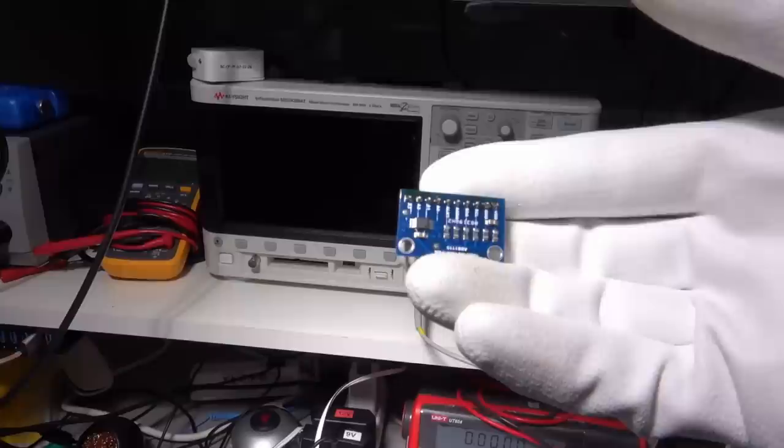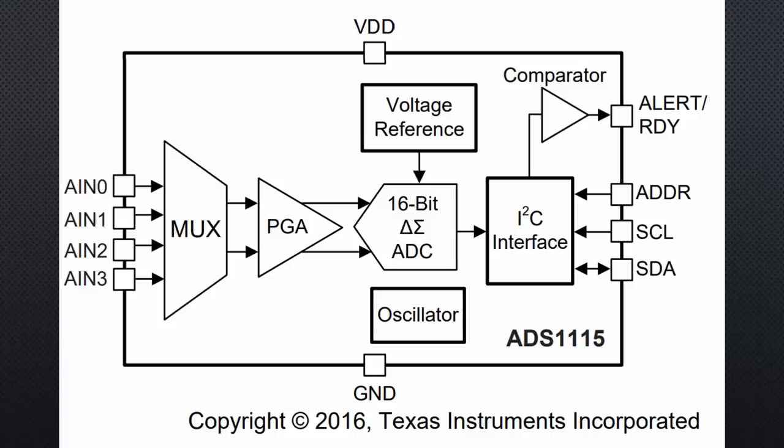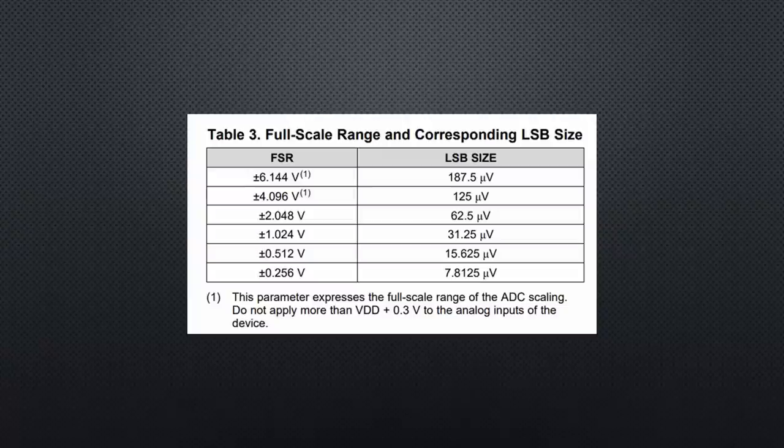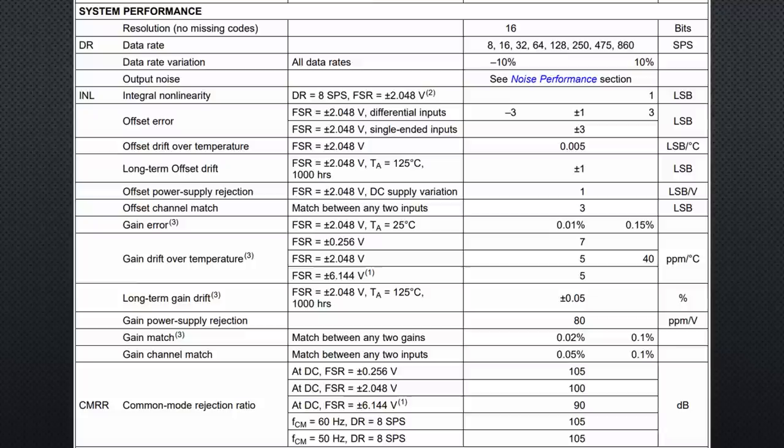On AliExpress, we find modules with external ADCs. The most common one is the ADS-1115 breakout board. It has one 16-bit ADC with 4 input pins, and it is connected via I2C. Its sample rate is 860 samples per second maximum. And it has a specialty, a so-called Programmable Gain Amplifier, short PGA. It can be used to increase the resolution for smaller voltages. We find a bunch of data about accuracy in the datasheet.